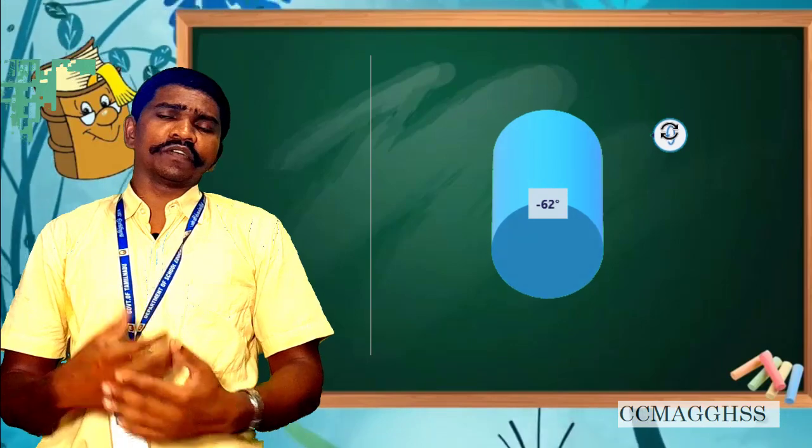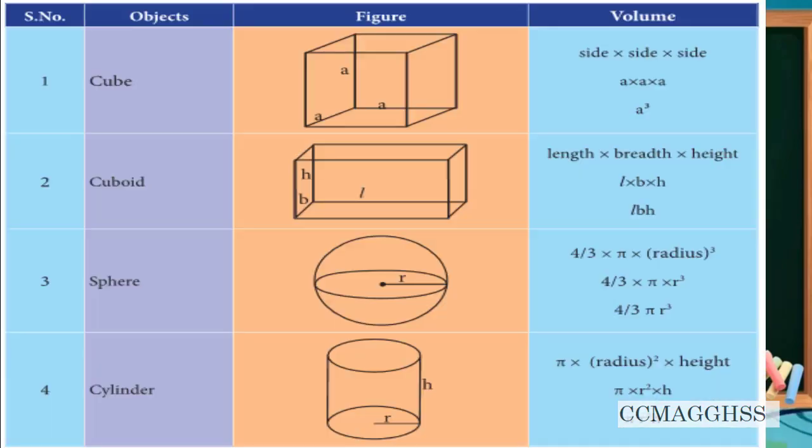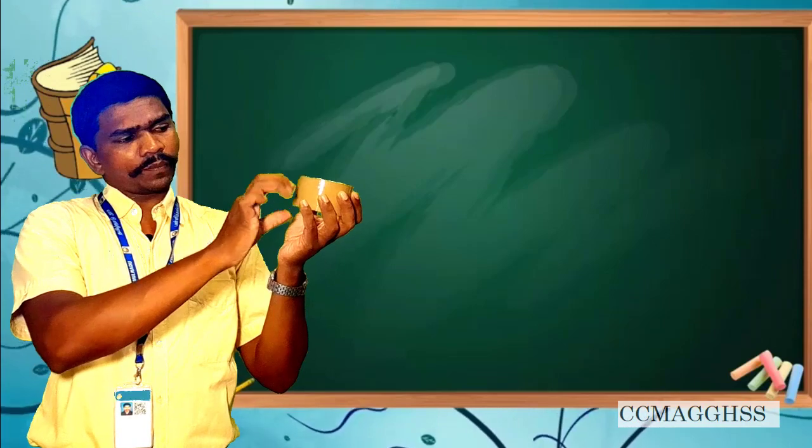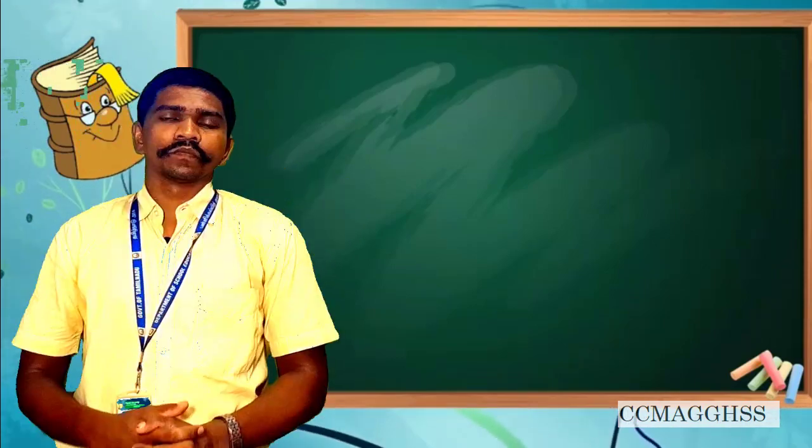Find out the volume of regular shapes just like cube, cuboid, sphere and cylinder. We have formulas. Just go through this tabular column. For cube, A into A into A. For cuboid, L into B into H - H is height. For sphere, it is 4/3 pi R cube. For cylinder, it is pi R square H - that is, area of circle multiplied with height.